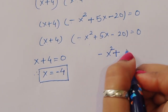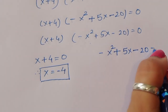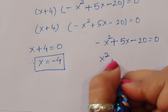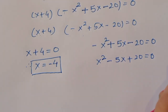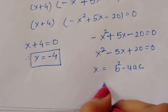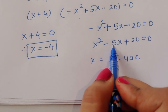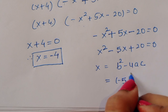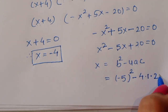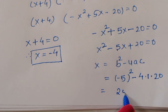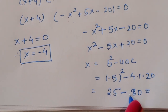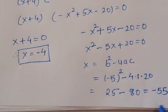From the second factor, minus x squared plus 5x minus 20 equals 0. Multiplying through by minus 1 gives x squared minus 5x plus 20 equals 0. Using the quadratic formula, b squared minus 4ac: here b is minus 5, so b squared is 25, and 4ac is 4 times 1 times 20 equals 80. So the discriminant is 25 minus 80 equals minus 55.